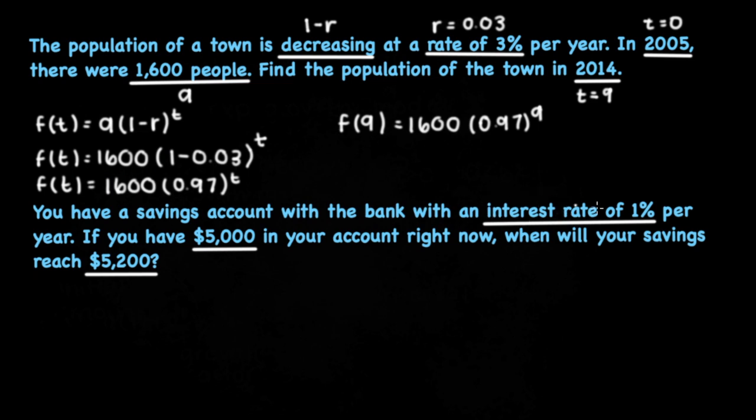So given that it's an interest rate, we know we're going to be using the exponential growth model. So that's going to be 1 plus r and r is 0.01 per year. You have 5,000 right now. That's going to be our initial value, a.